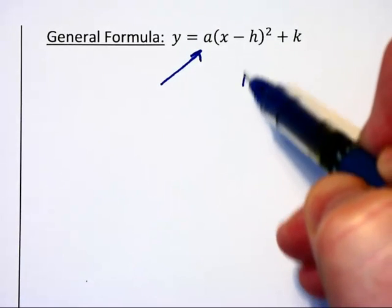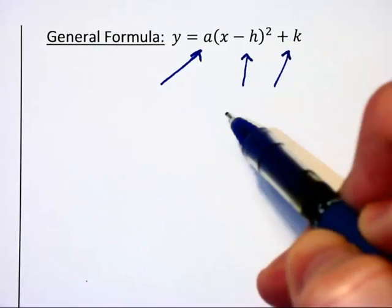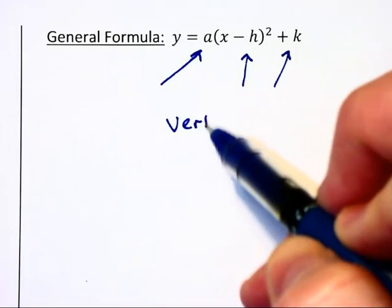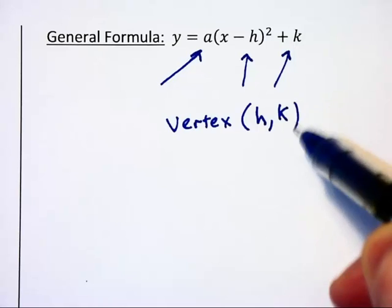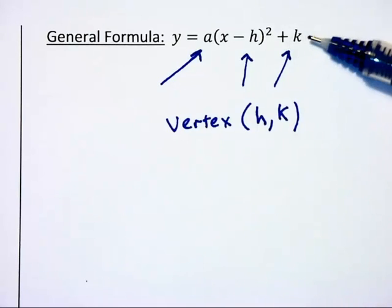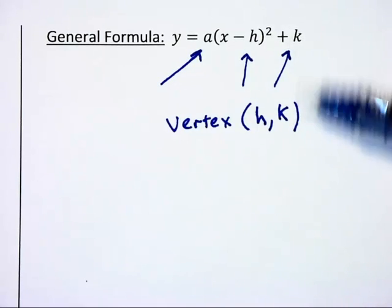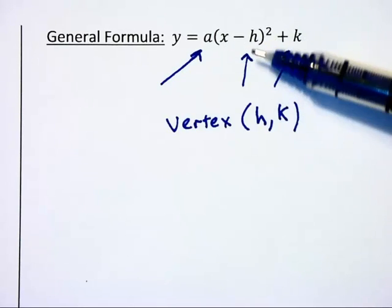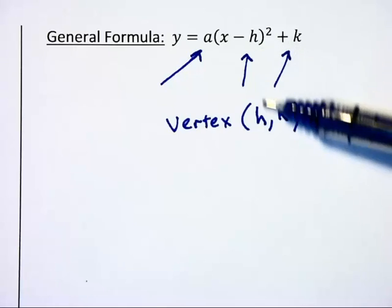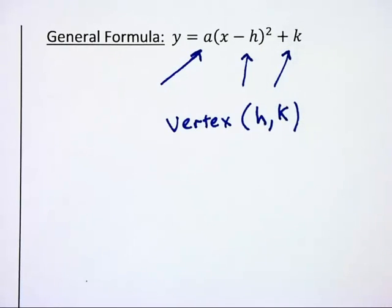But now we're adding into this another aspect, which is the vertex. The vertex is going to be located at h, k. Notice how k is already positive in this form, but h is inside this x minus h squared. You're always going to be changing the sign of h when we're going to write the vertex.